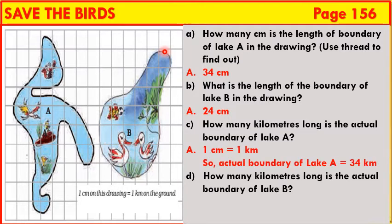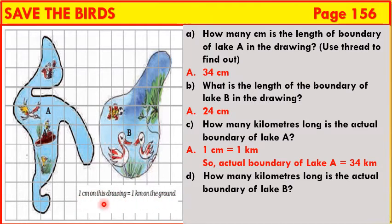Exercise C: How many kilometers long is the actual boundary of Lake A? In this figure, the scale is given as 1 centimeter on the drawing equals 1 kilometer on the ground. So 1 centimeter on this drawing means an actual distance of 1 kilometer. Therefore, the actual boundary of Lake A is 34 kilometers.